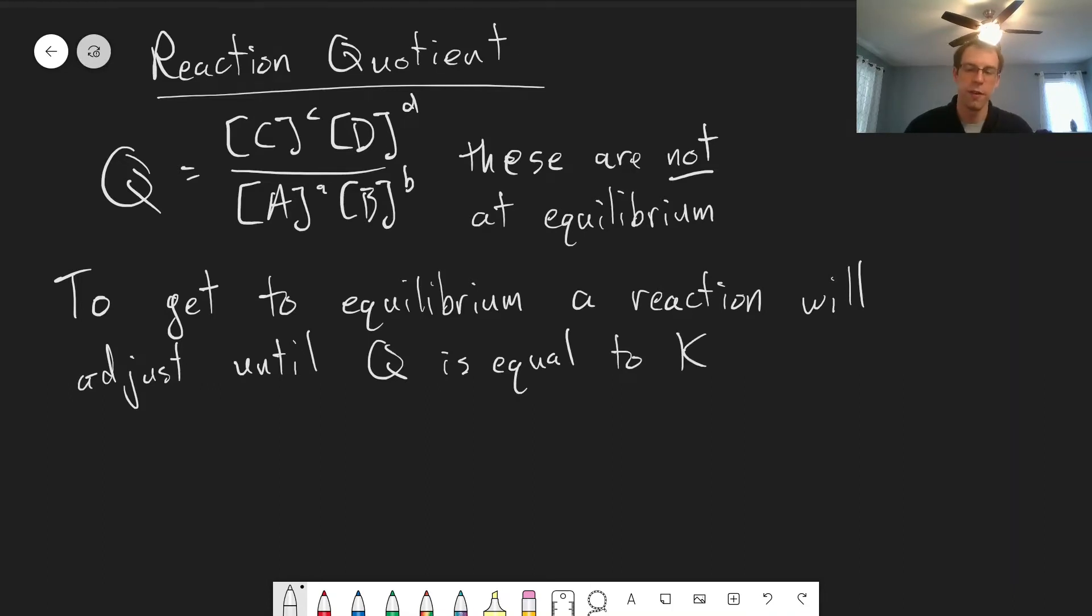For example, if we have a reaction going from A and B to C and D, and we mix A and B together, at that instant we mix them together, we have no C and D and our reaction quotient will be zero. As the reaction proceeds, we will start producing C and D, and we'll produce C and D until this ratio defined by this reaction quotient is equal to K.